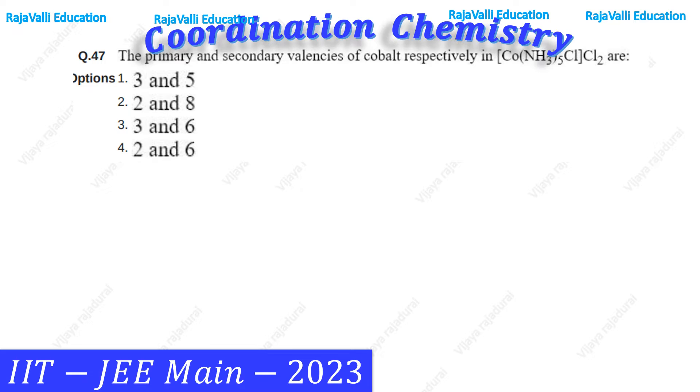The question is: the primary and secondary valences of cobalt respectively in [Co(NH3)5Cl]Cl2.